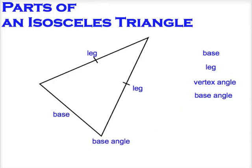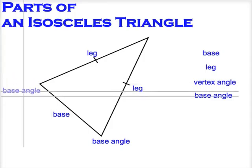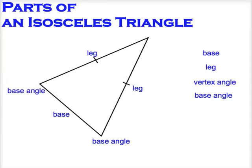The angles that are connected to the base are called the base angles. The angle opposite the base is called the vertex angle. And if you care, the plural of vertex is vertices, not vertexes.